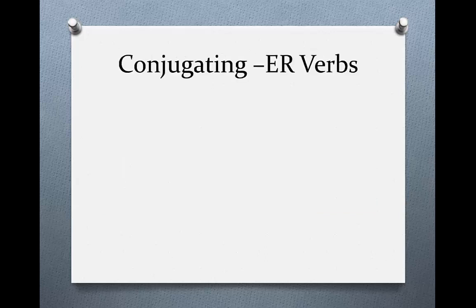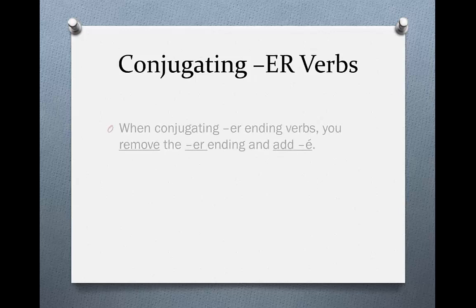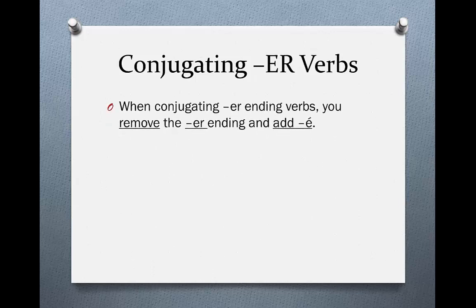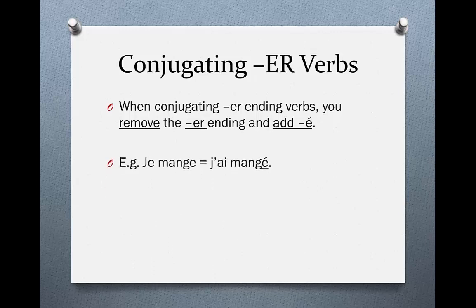Now we're going to look at how to conjugate ER verbs to get the past participle. All we have to do is remove the -er and add an -é with an accent. So, for example, je mange turns into j'ai mangé.